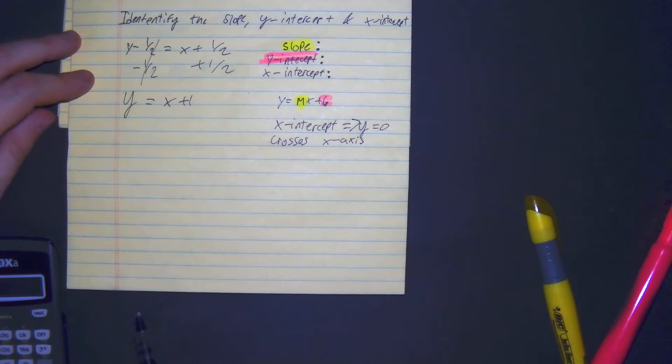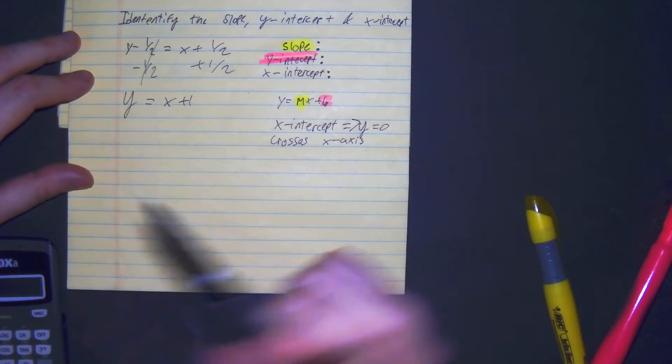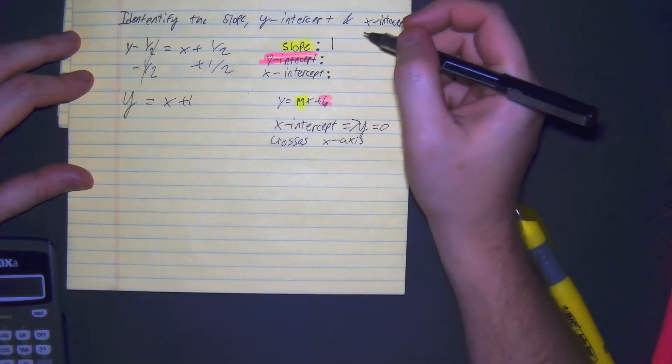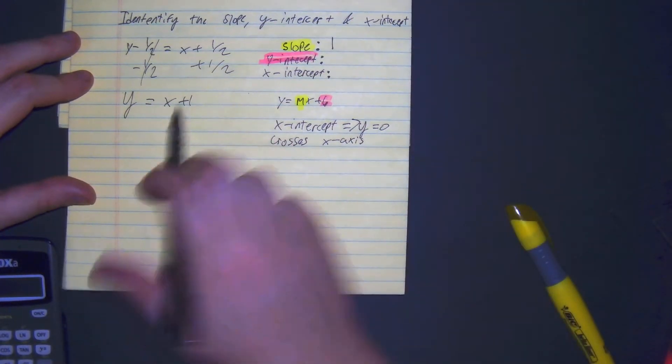We put it in slope-intercept form. Pretty simple. So no number in front of it means it's a 1. Our slope is 1 over 1. Our y-intercept is a 1.